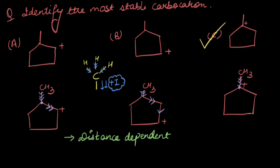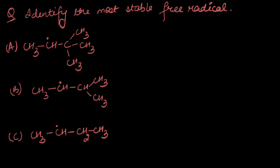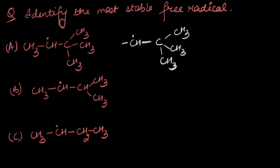Next, we need to identify the most stable free radical. Free radicals are electron deficient species as well. In the options, there's a methyl group on the left hand side of the radical in each case — methyl groups are electron donating and depict a +I effect. To compare, let's look at the right hand side of the radical. In the first case, the carbon directly attached to the radical is also attached to three other methyl groups.